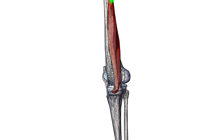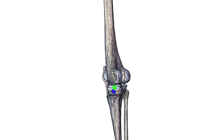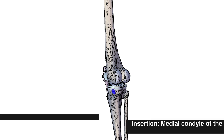We can see the distal portion of the semimembranosus muscle coming down the femur and then moving into its tendon, which is inserting onto the tibia. Highlighted here in blue is the insertion of the semimembranosus. On either side of the tibia you have a rounded prominence called condyles, and it's inserting onto the medial aspect of the medial condyle of the tibia.